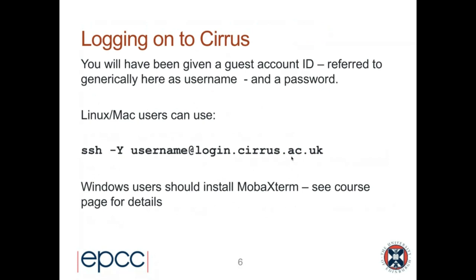Once you've got your account on Cirrus and you can log in, Linux and Mac users can use the SSH command from a terminal to log into Cirrus. What we recommend for Windows users is to install an application called MobaXterm — there are instructions on the course webpage as to where to download that from and how to use it to connect to Cirrus.